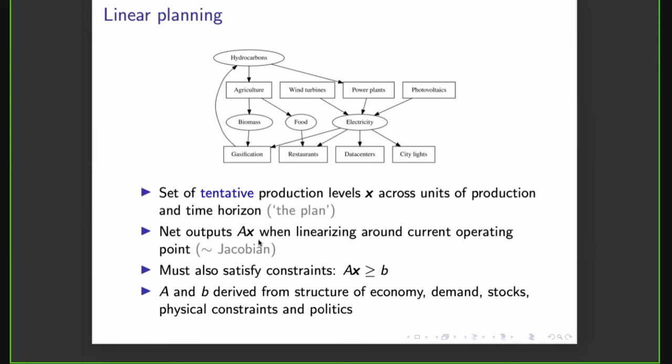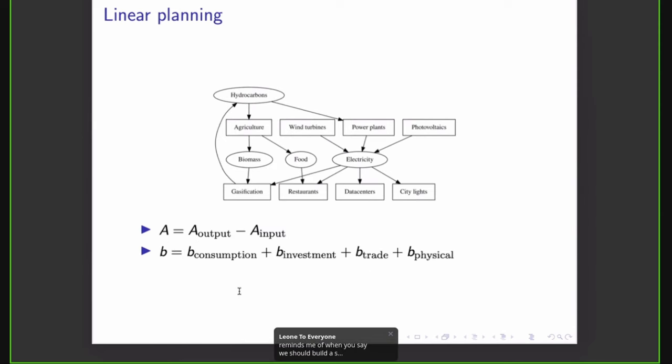In addition, we have to satisfy a set of constraints on these net outputs. So A times X greater than or equal to B. And these A and X are derived from the structure of the economy, from demand, from stocks, from physical constraints, and of course, from politics. We can decompose both A and B. So A we can decompose into an output side, an input side, and we can also decompose B into consumption, investment, trade, and physical constraints. So we can bake all of this into a single formalism.